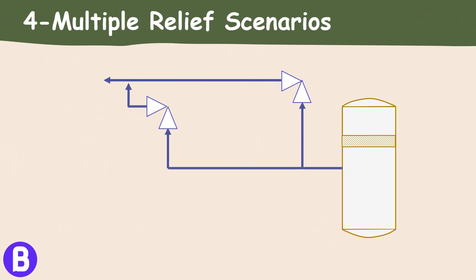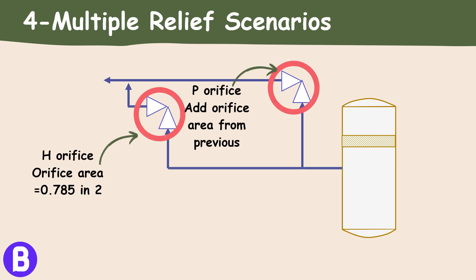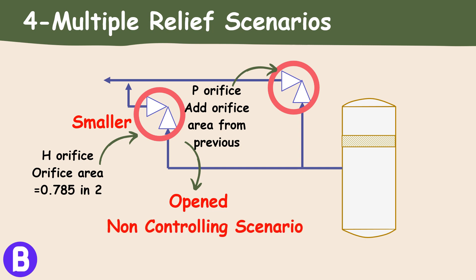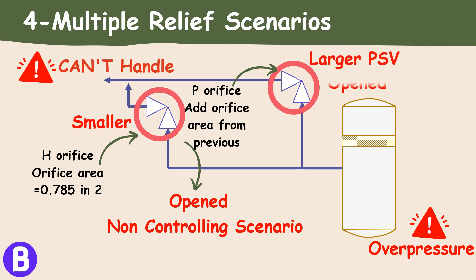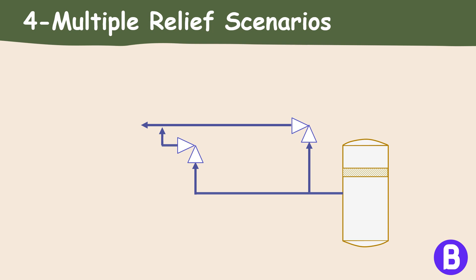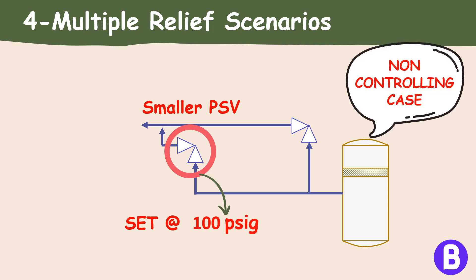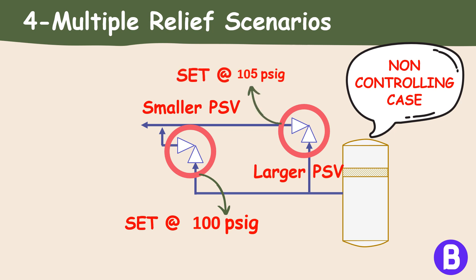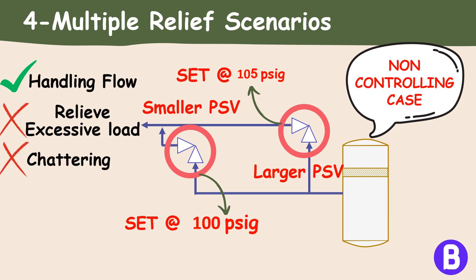One recommended solution is to install multiple PSVs with staggered set points. By employing two PSVs of different sizes, the smaller one opens first at a lower pressure, gradually relieving the system — this shall mainly be utilized in the non-controlling scenario. If overpressure still occurs and the small PSV cannot handle it, the larger PSV shall open. For example, if the set pressure is 100 PSIG, a smaller PSV opens at 100 PSIG for inlet valve failure, and if pressure continues to rise, the larger PSV opens at 105 PSIG, handling the higher flow requirements without causing excessive load and PSV chattering.